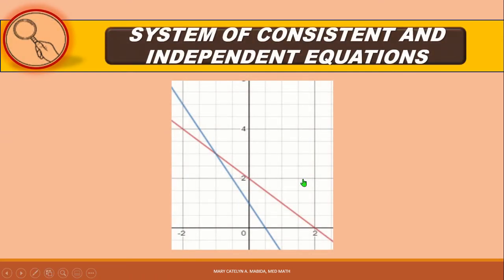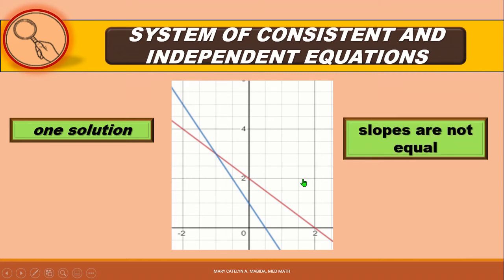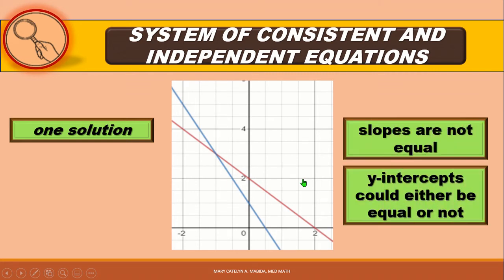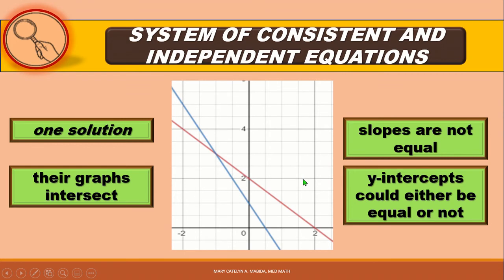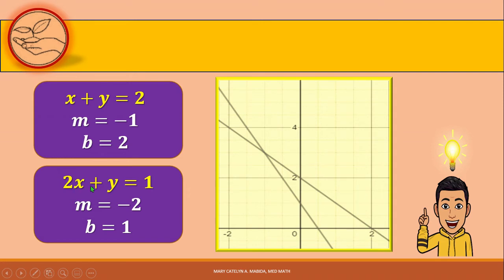A system of consistent and independent equations has exactly one solution. The slopes of the lines defined by the equations are not equal; their y-intercepts could either be equal or not, and their graphs intersect. For example, the system x plus y equals 2 and 2x plus y equals 1 is consistent and independent. The slopes of the lines are not equal, their y-intercepts are not equal, and their graphs intersect.